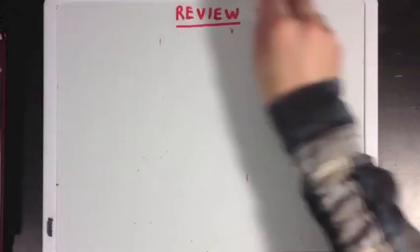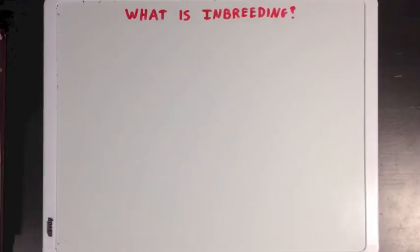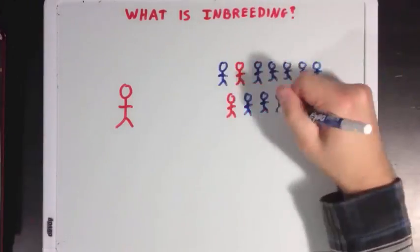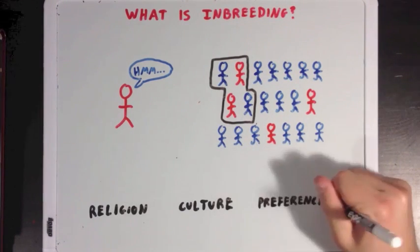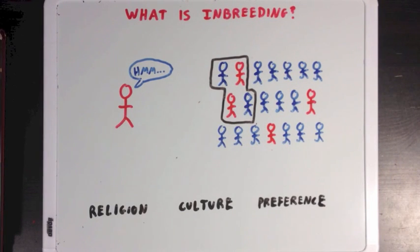So what is inbreeding exactly? Inbreeding is when people in a population will selectively have offspring with a certain smaller group within that larger population. This can be for a bunch of reasons like religion or culture or maybe just because of preference. When inbreeding occurs with non-human populations, it's almost always due to geographical barriers where the greater population simply isn't accessible.